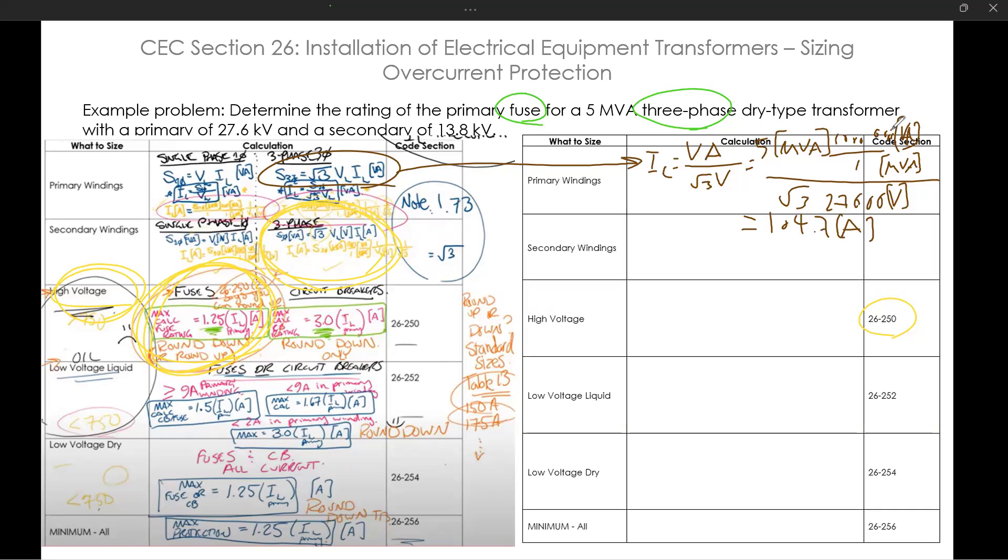If I were to do that for the secondary windings, I'm going to do it in a different color. For the secondary windings, I would get I equals five megavolt amps times 1,000,000 volt amps. I'll divide all of that by root three times the voltage, which is 13,800 volts. So this would get me for the secondaries 209.4 amps.